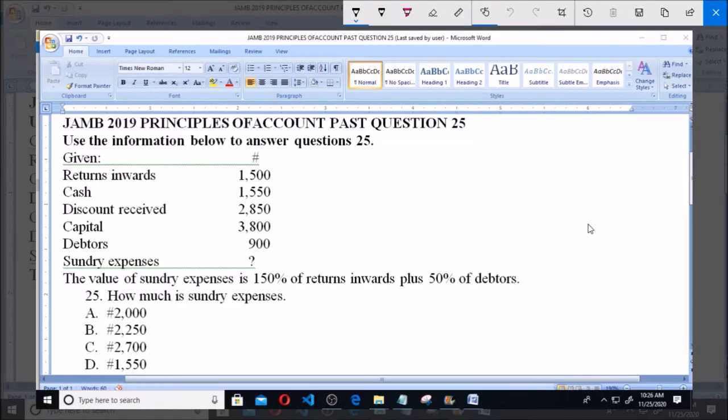2019 principles of account past question number 25. Use the information below to answer question 25. Given in the question is: returns inward 1,500, cash 1,550, discount received 2,850, capital 3,800, debtors 900, and sundry expenses unknown.